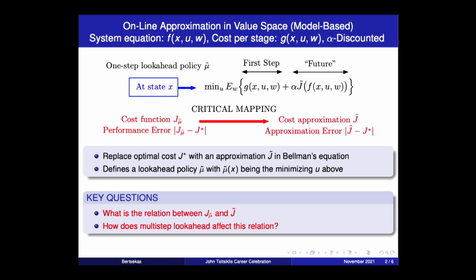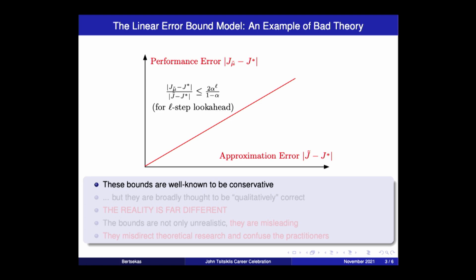So there's a standard approach to this question, which is the linear error bound model. It says that the approximation error and the performance error are related by some kind of a linear relation. And there's a certain classical bound. It's from the 60s. It's a folk theorem from the 60s that says that the ratio of these two is bounded, something that depends on alpha. L is the length of the look-ahead. So with more look-ahead, the bound improves. And there's a linear relationship. And this quantity here is the slope of this line.